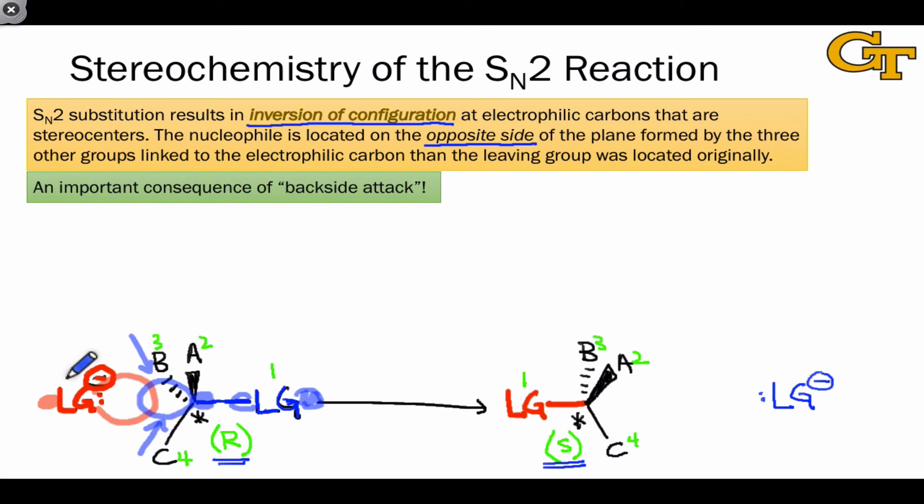And it may not necessarily lead to a change in configurational label since if the nucleophile is structurally different from the leaving group, prioritizations will change in going from reactants to products. The important point is that the nucleophile in the products ends up linked to the opposite side of the plane formed by A, B, and C than the leaving group was positioned in the original reactant.